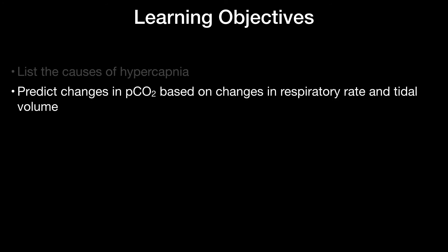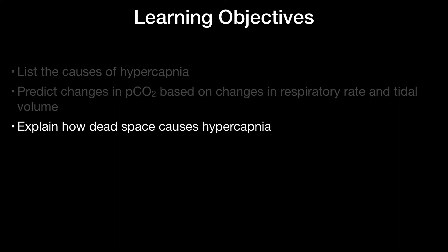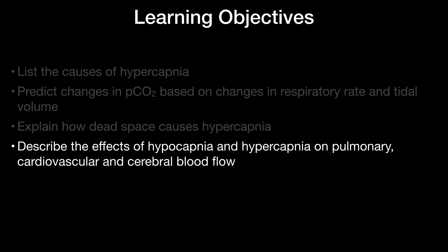Let's review the learning objectives. We've listed the causes of hypercapnia, predicted changes in PCO2 based on respiratory rate and tidal volume, explained how dead space causes hypercapnia, and described how hypercapnia affects pulmonary, cardiovascular, and cerebral blood flow. With regards to hypocapnia, it does the exact opposite. For example, in patients with traumatic brain injury or increased cerebral pressure, we hyperventilate them to decrease PCO2 and reduce cerebral blood flow. And with that, we've covered the derangements in PCO2.